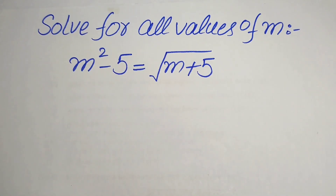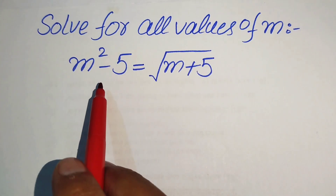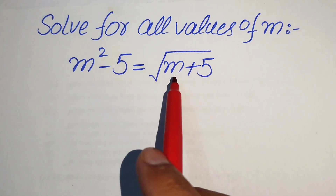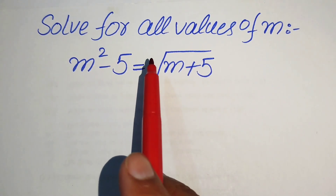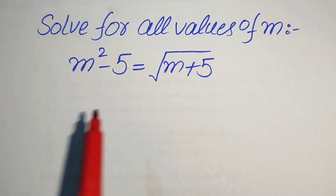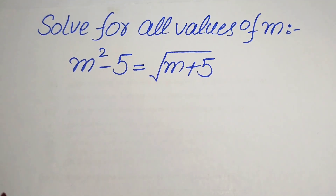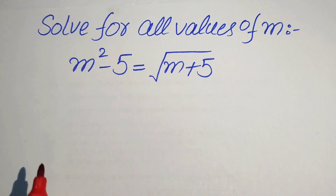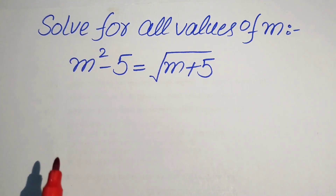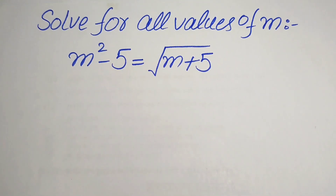Hello everyone, welcome. We solve this nice math olympiad algebra problem. Here we have m squared minus 5 equals square root of m plus 5. We solve this problem for all the values of m. I will solve this problem in a very different approach or method, so please watch the video till the end.